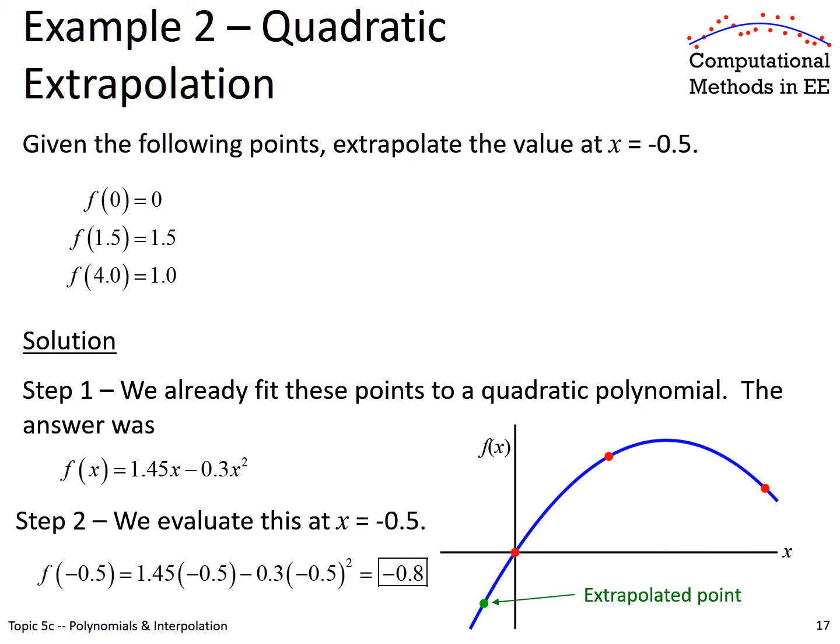Now we just plug in a value of x that is outside of our measured range from 0 to 4, and we get a negative 0.8. If we plot that, we also see that this falls on top of our blue line. Now, in general, I will add that extrapolating tends to be less accurate and more guesswork than interpolation. But if you have no other choice, maybe it's impossible to make a measurement at x equals minus 0.5. And so the only thing that we have to do is extrapolate.